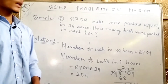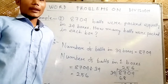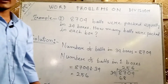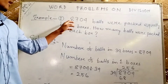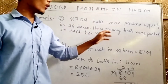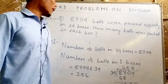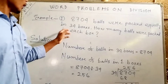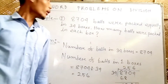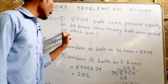Good morning students. Today we will talk about word problems on division. Example one: 8700 balls were packed equally in 34 boxes. How many balls were packed in each box? We have 34 boxes and 8700 balls packed equally.